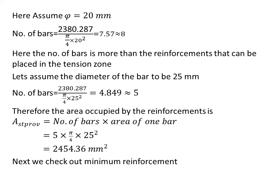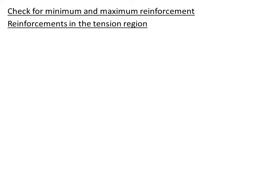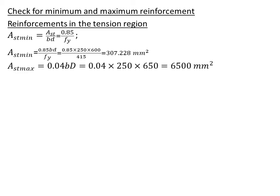Now let's check the minimum reinforcements. Check for minimum and maximum reinforcement. Reinforcement in the tension region: Ast minimum equals 0.85 × bd / fy, which is given in the code. Ast minimum we substitute and we get 307.228 mm². Then we find Ast max, that is 6500 mm². Hence it satisfies the condition, it is safe.